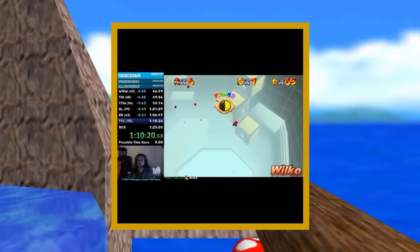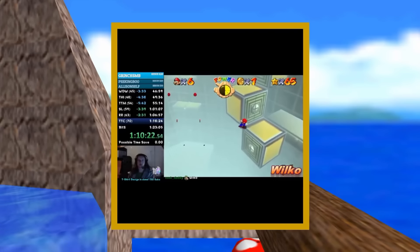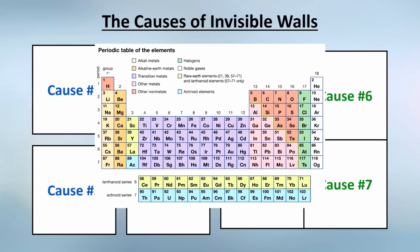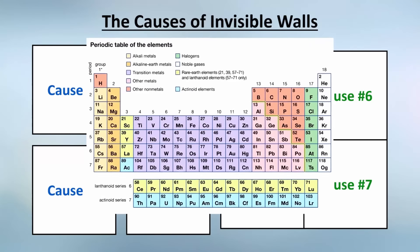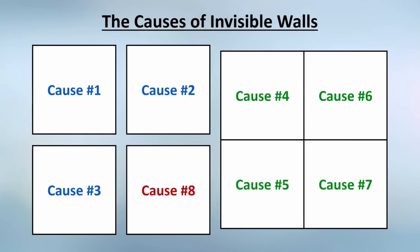Why is there an invisible wall there? So I basically created the periodic table of elements, but for invisible walls. And we're gonna spend the rest of forever filling it out.